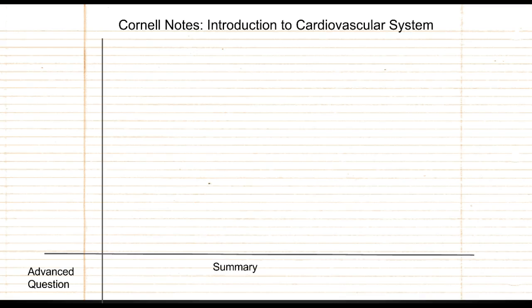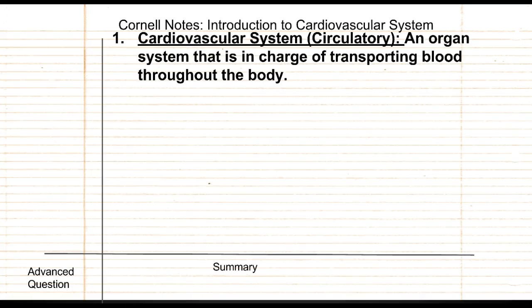For number one, write the cardiovascular system. Write circulatory in parenthesis because on a test you might see the word circulatory and forget that it's the same as the cardiovascular. The cardiovascular system is an organ system made of different organs that's in charge of transporting blood and other material throughout your body.